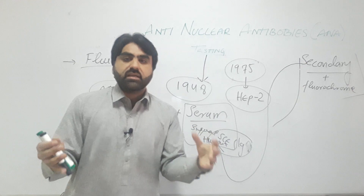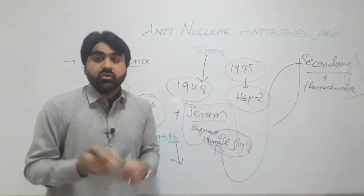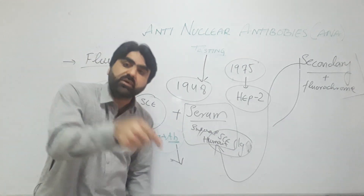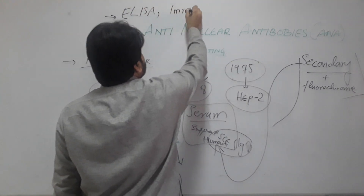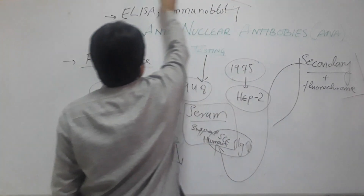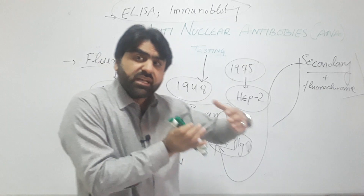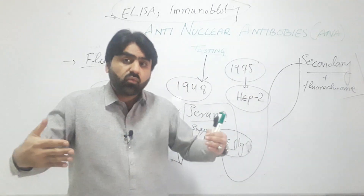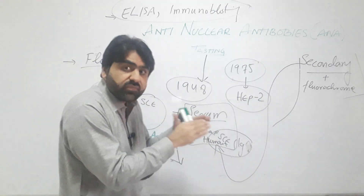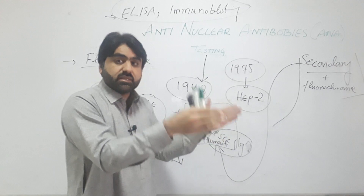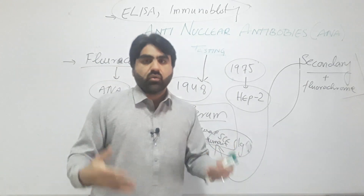There are also other methods used for the detection of specific subtypes of anti-nuclear antibodies, such as ELISA or immunoblotting. These techniques are further used for detecting subtypes because different subtypes have more specificity and correlate well with different autoimmune diseases. Therefore, the specific identification of different anti-nuclear antibody subtypes has great importance in making a diagnosis of diseases within the connective tissue autoimmune disease group.